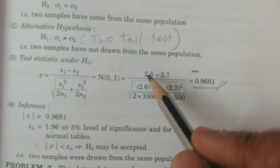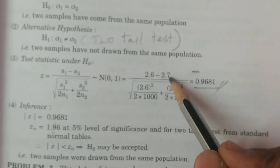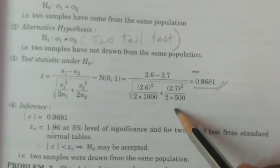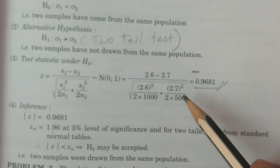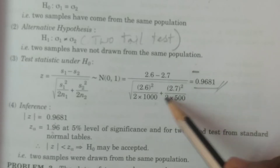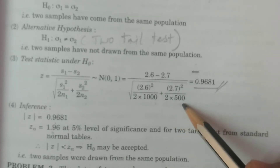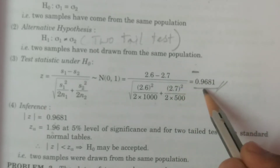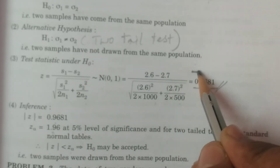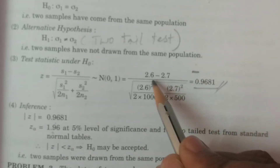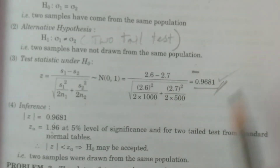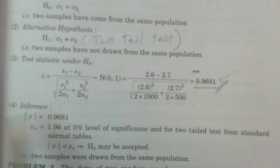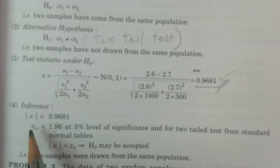Now substitute values: Z equals (2.6 minus 2.7) divided by the square root of (2.6 squared over 2×1000 plus 2.7 squared over 2×500). Inference — last point: inference is the comparison and conclusion.